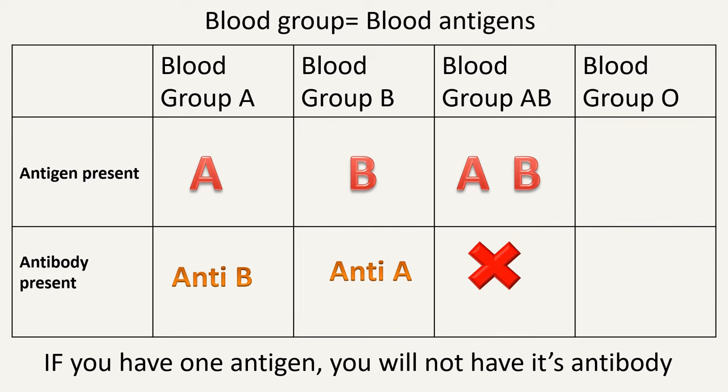Blood group O individuals do not contain antigen A or antigen B — as we know, they have antigen H. Thus they show the presence of antibodies against both antigen A and antigen B, as both antigen A and antigen B are foreign for blood group O individuals.